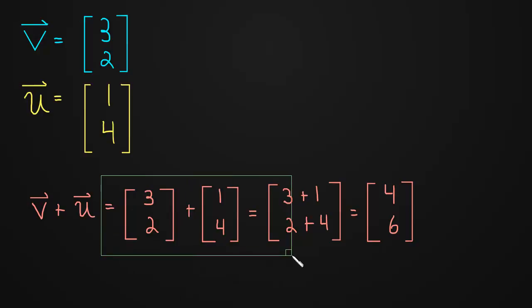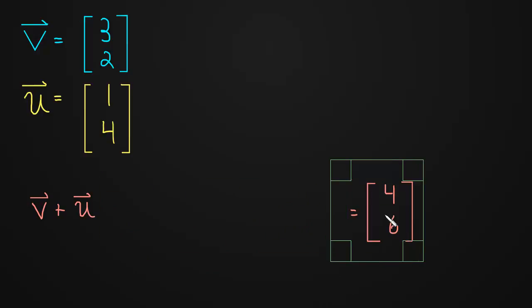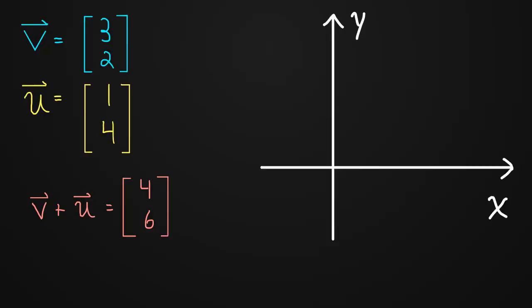Okay, so just to save some space, let me erase these steps here. I'll move this over. Okay, so let's now look at this on a graph. Here is u and v, u in yellow, v in blue.